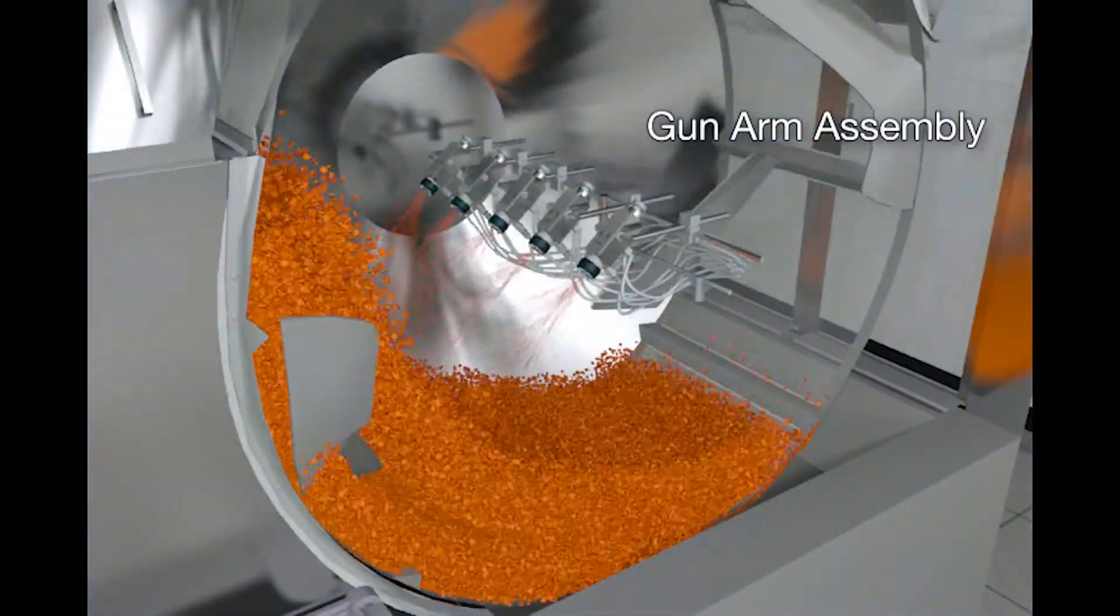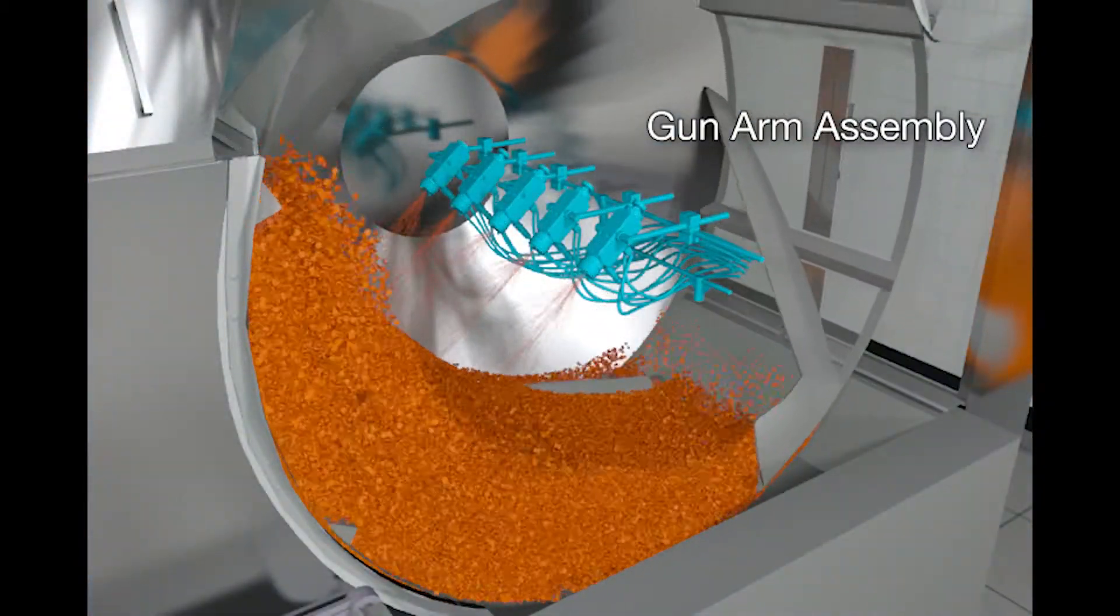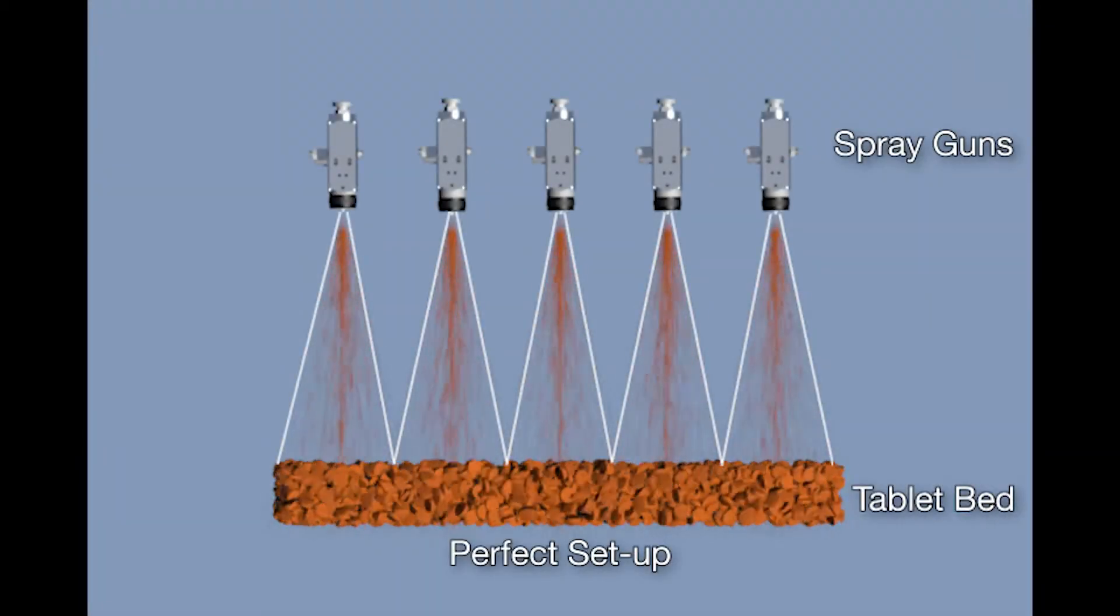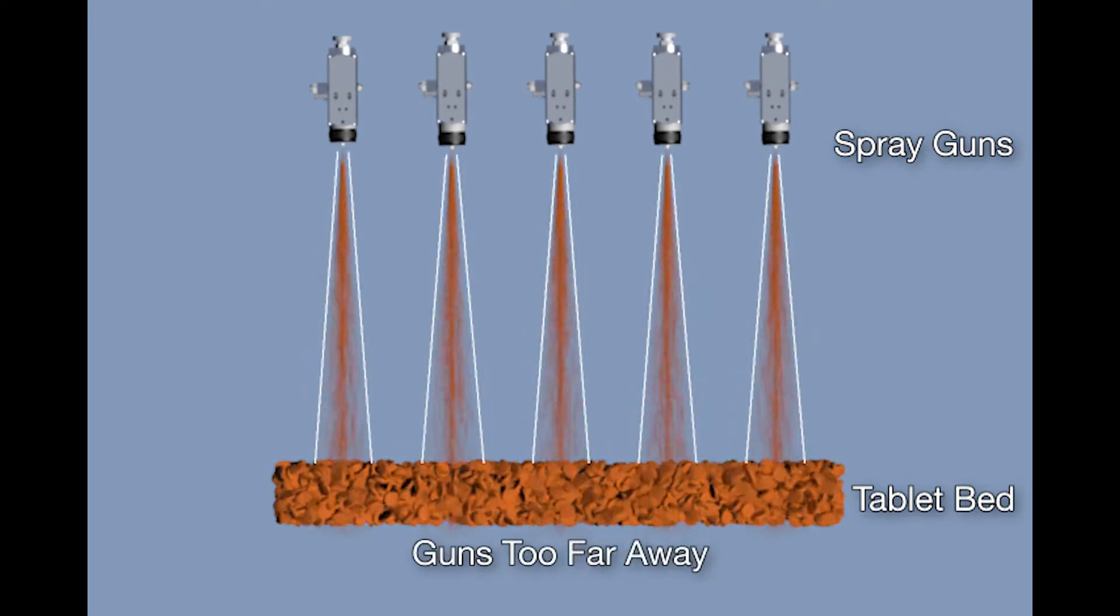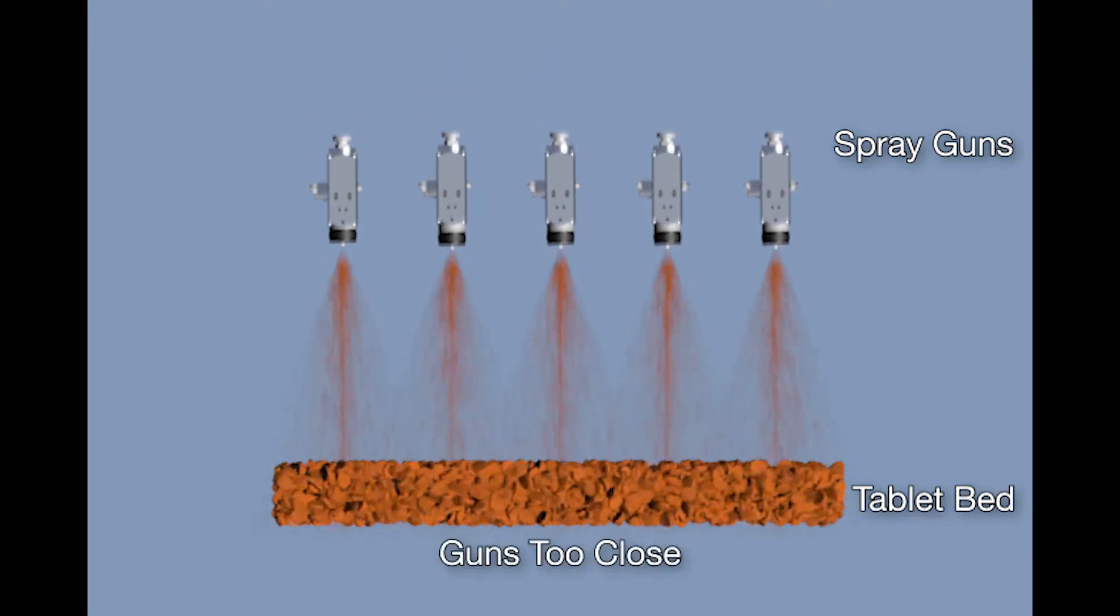A gun arm assembly permits easy access to each spray gun for adjustments, priming and cleaning. It is critical that the gun to bed distance is correct to ensure uniform coverage of the tablets.